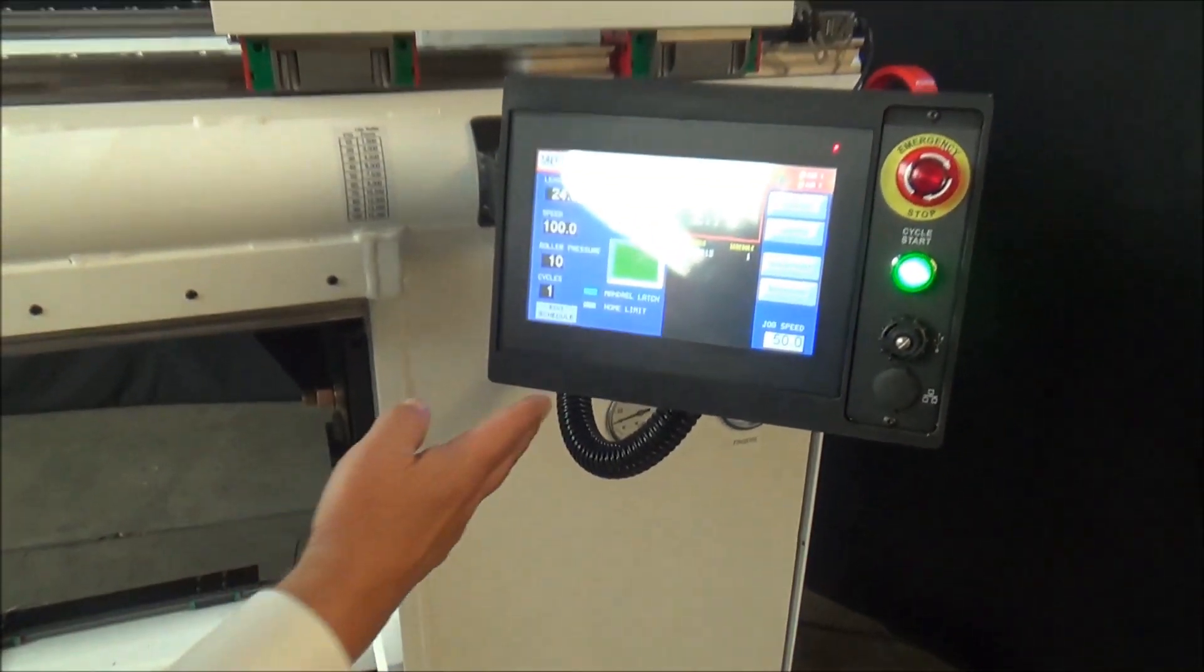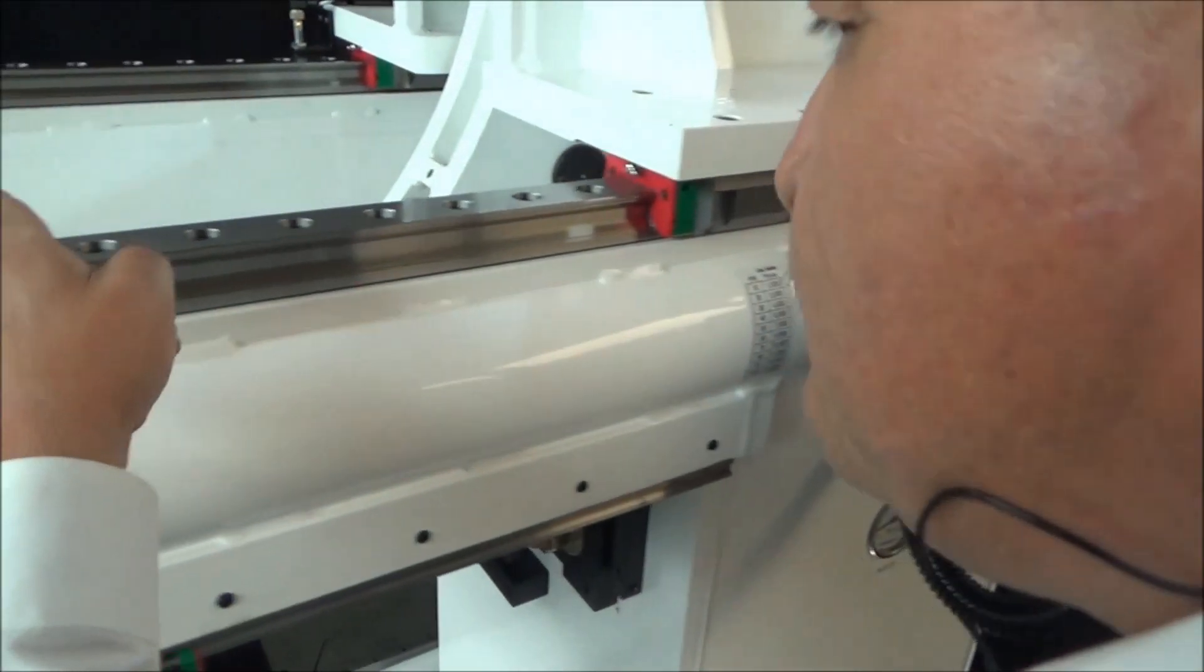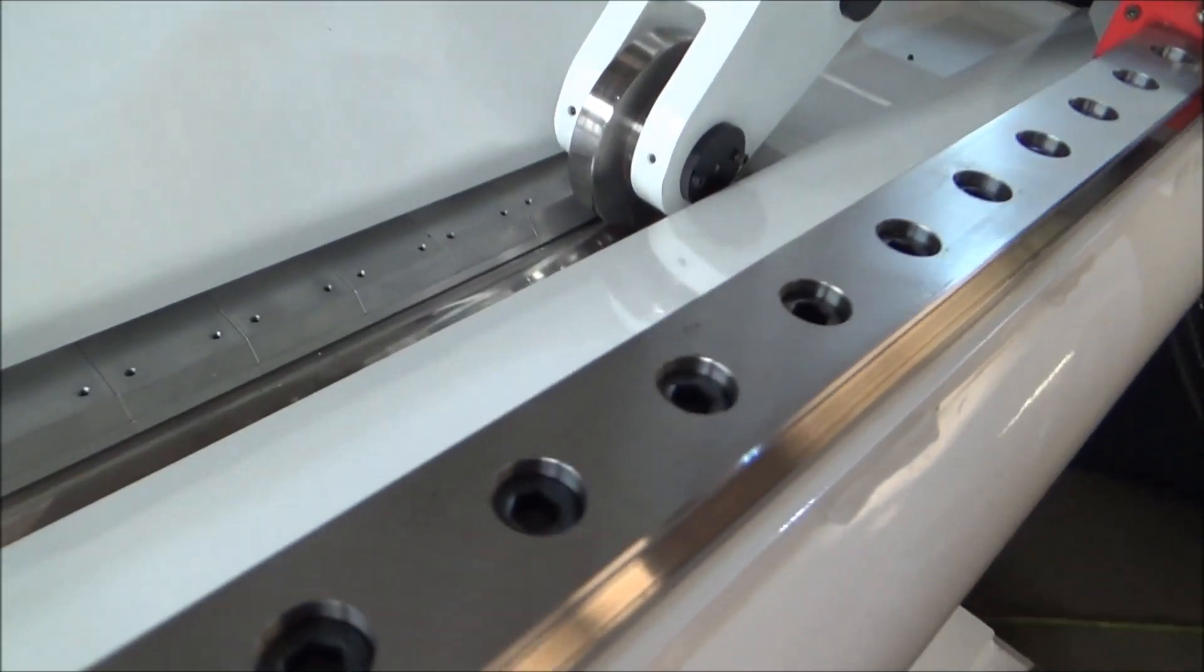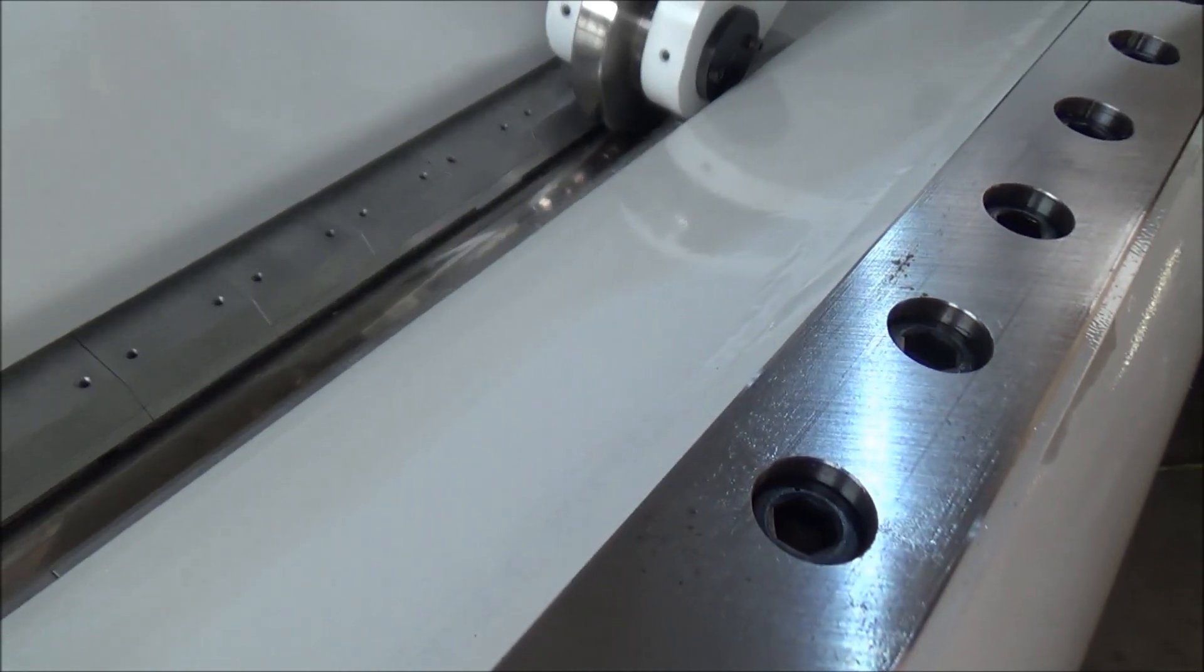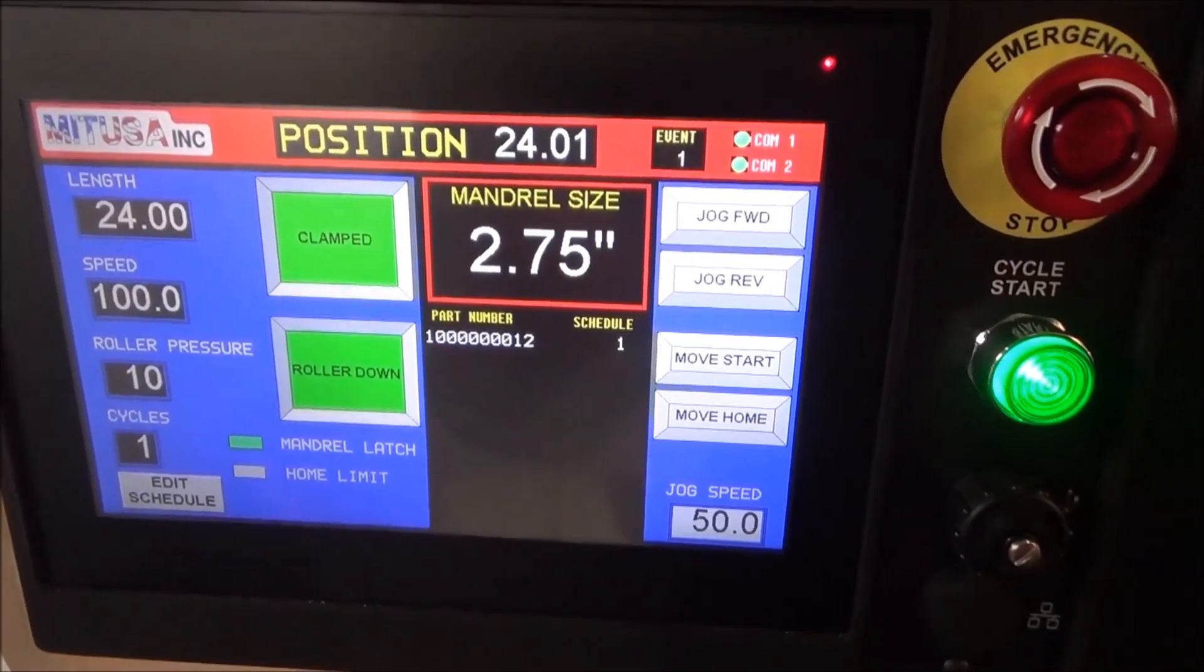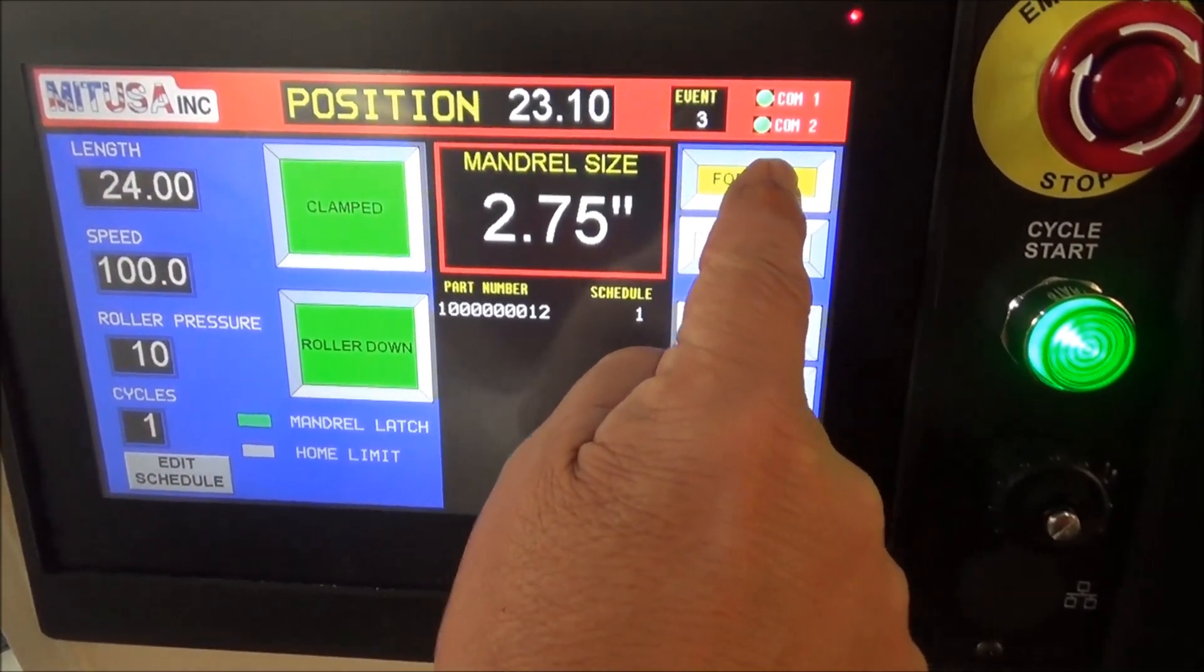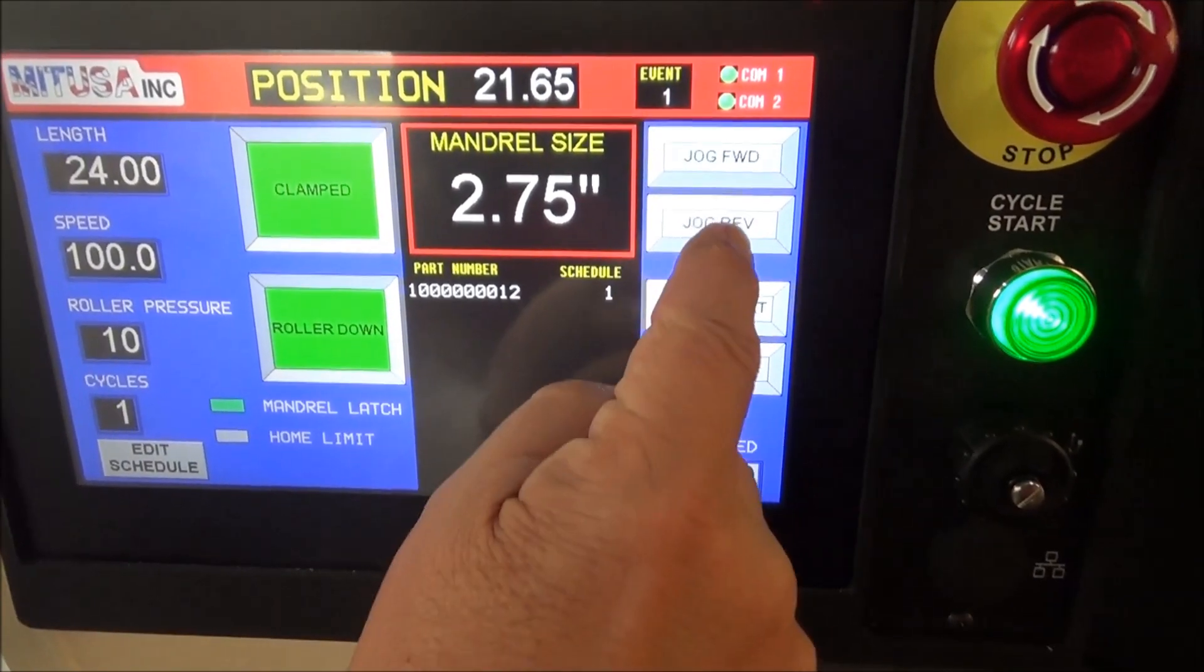We can clamp the fingers. If you look at the screen here you have your manual functions which is your forward speed, your forward travel and your reverse travel.